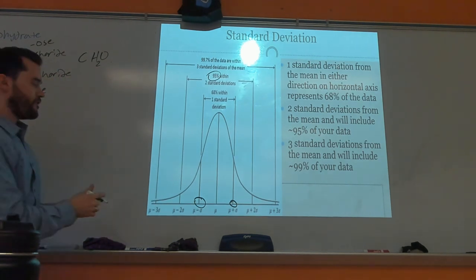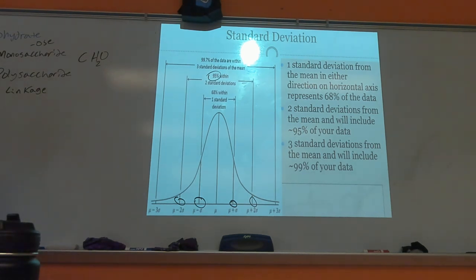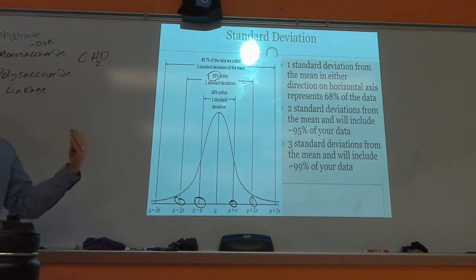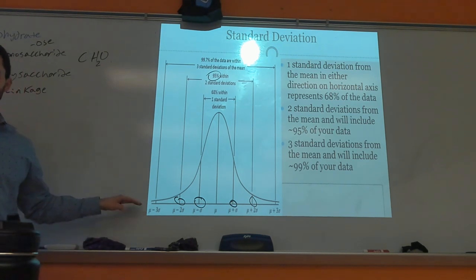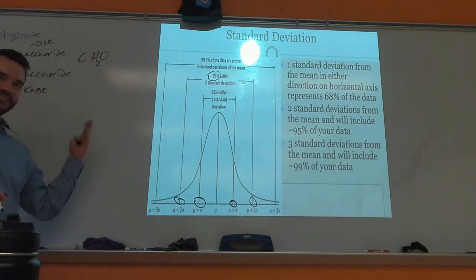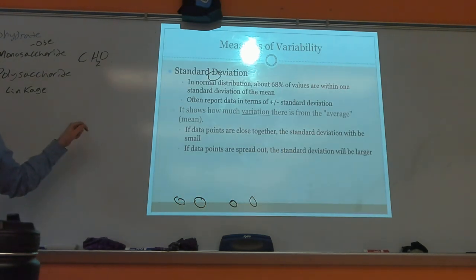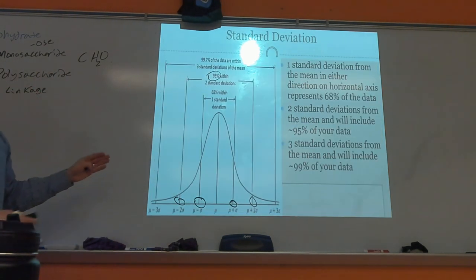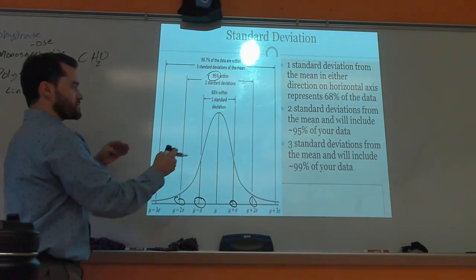If you go two standard deviations, 95% of all the test scores fall between those two brackets. Beyond two standard deviations is the outlier territory — the hundreds or the very low scores. The more clumped up the bell curve gets, the lower the standard deviation; the more it spreads out, the higher the standard deviation will be.